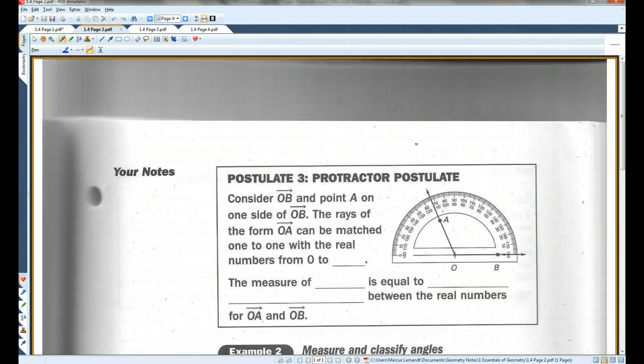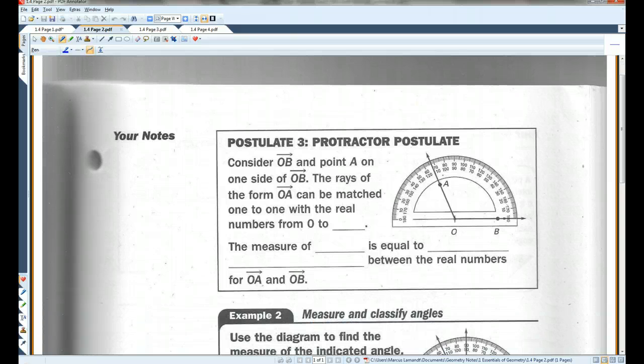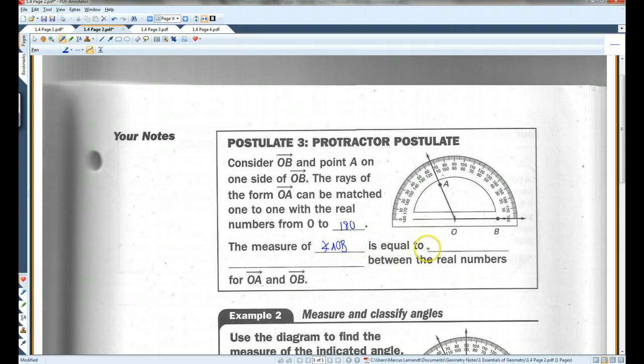Alright. Let's go on to page two. Postulate three. Protractor postulate. Consider OB and point A on one side of OB. The rays of the form OA can be matched one to one with the real numbers from zero to 180. The measure of angle AOB is equal to the absolute value of the difference between the real numbers for OA and OB. In this case, it looks like 113 degrees, roughly.